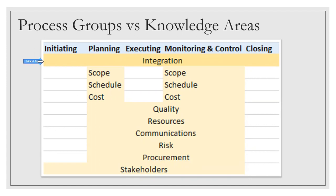All 10 knowledge areas are scattered across the process groups. There is only one knowledge area that cuts across all five process groups throughout the entire waterfall lifecycle: Integration Management. I'm not starting with Integration Management because it is a mixture of all other knowledge areas and is more complex — it's one of the key reasons a project manager exists in a company. We will cover it after completing the core knowledge areas.